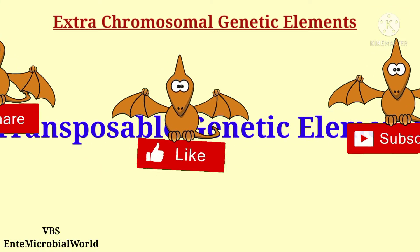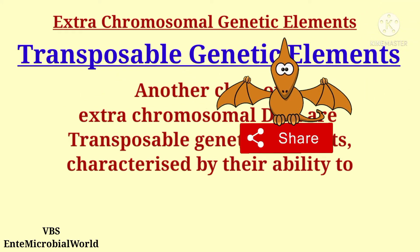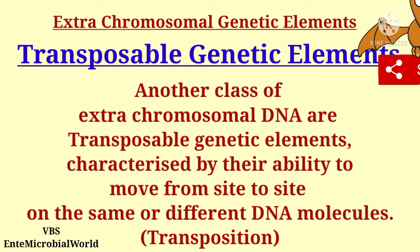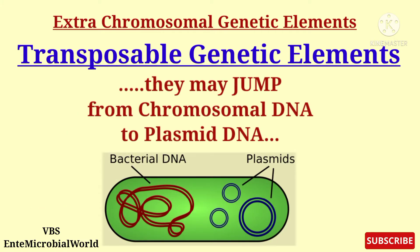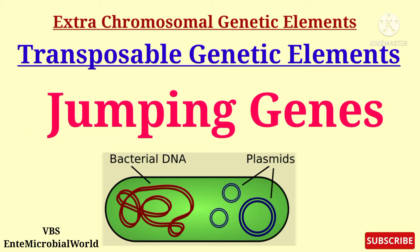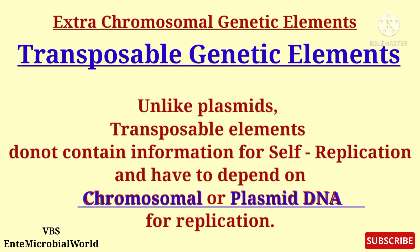Next we are going to see about transposable genetic elements. Another class of extra chromosomal DNA, transposable genetic elements are characterized by their ability to move from site to site on the same or different DNA molecules — they may jump from chromosomal DNA to plasmid DNA. Because of this free mobility, they are also known as jumping genes. Unlike plasmids, transposable elements do not contain information for self-replication and depend on chromosomal or plasmid DNA for replication.